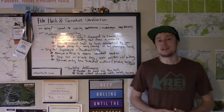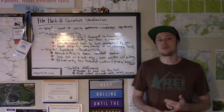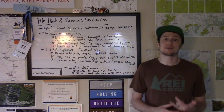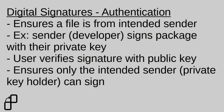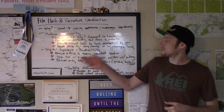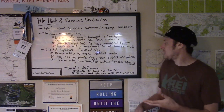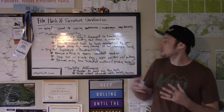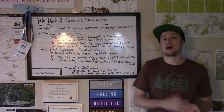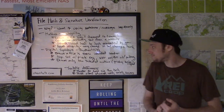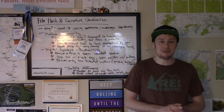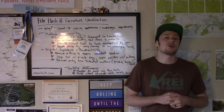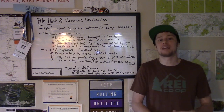There's another concept we need to talk about, which is authenticity, and this is a little bit different than integrity. Usually when we talk about authenticity in this context we're talking about digital signatures. So instead of just comparing hash values for a piece of software, what we're going to do is ensure that a file is from the intended sender. The software developer will sign the software package with their private key and share their public key — hopefully make it widely available — and you can use software to verify that the digital signature matches the public key of the software developer. This doesn't just ensure integrity but also ensures the authenticity of that file.